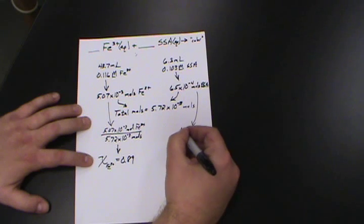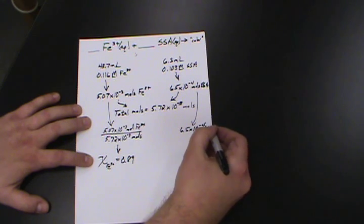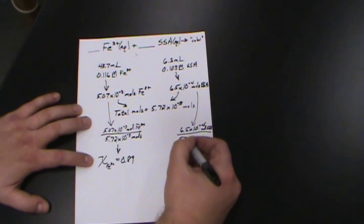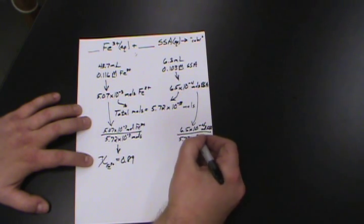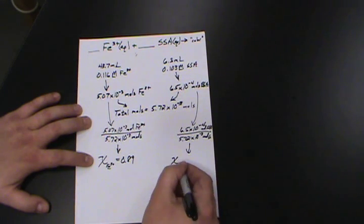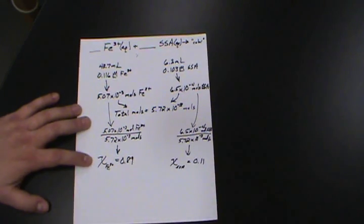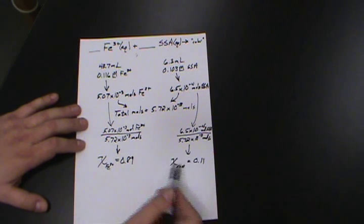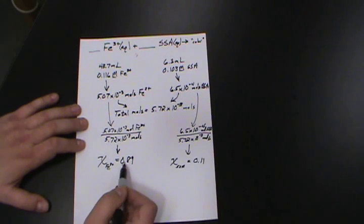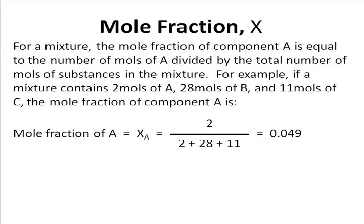Doing the same thing over here. I've got 6.5 times 10 to the minus four moles of SSA over 5.72 times 10 to the minus three total moles. So chi SSA must be 0.11. Mole fraction gives you a nice self-check here, because if these are the only two components, then this plus that must add up to one.